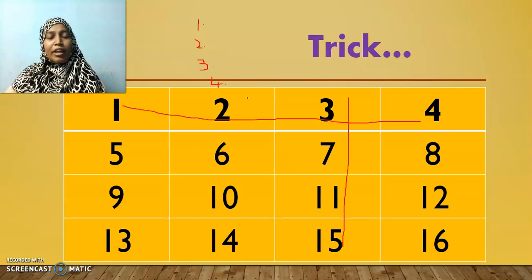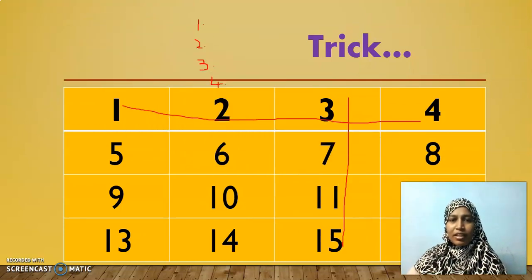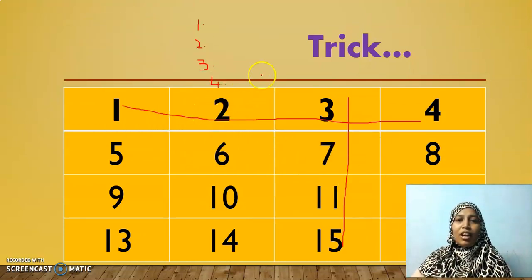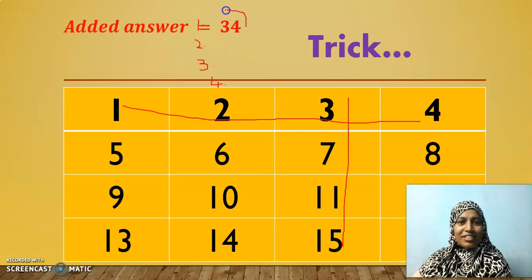Now, add up all these four numbers. Add all the four numbers that you have chosen. Have you all added? Now, your answer will be 34. Am I right? Now, find what trick is behind this trick.